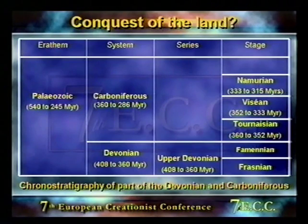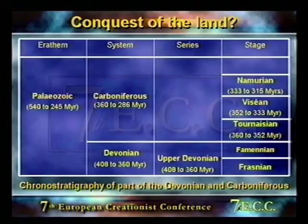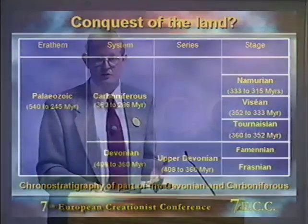The ages placed there are the conventional ages accepted by Darwinian scientists. I don't accept those ages — they're based on radiometric data and I don't accept that timescale — but they are the conventional ages accepted in the literature.